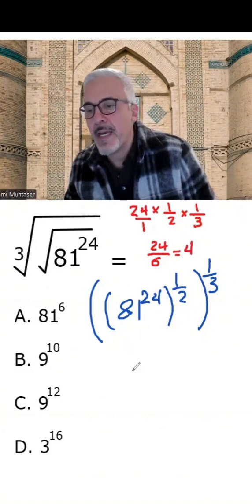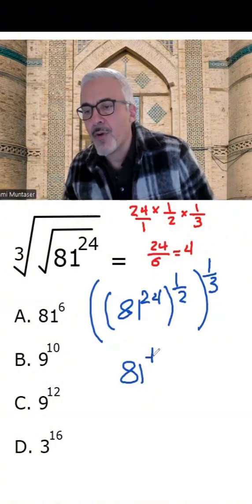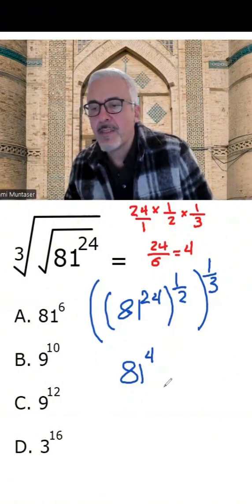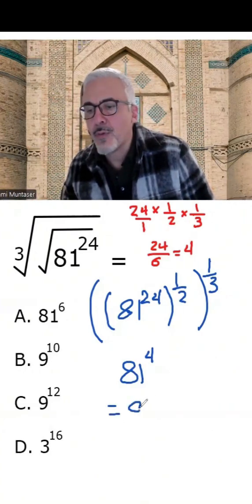And therefore, this is going to be 81 to the power of 4. Well, that's not an option. So now what I'm going to do is I'm going to change 81 to 9 squared to the power of 4.